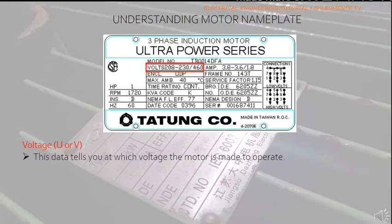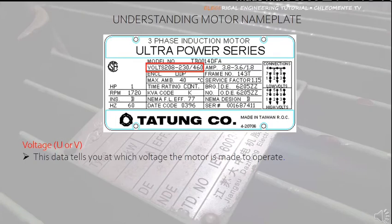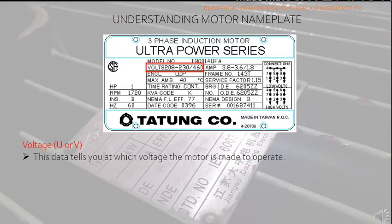The first parameter we will discuss is voltage, normally denoted by letter U or V. This data tells you at which voltage the motor is made to operate. The motor's power factor, efficiency, torque, and current are at rated voltage and frequency. When the motor is used at voltages other than indicated on the nameplate, its performance will be affected. In this example, the rated voltages are 208 to 230 volts and 460 volts, meaning this motor can be operated at low or high voltage depending on the leads connection.